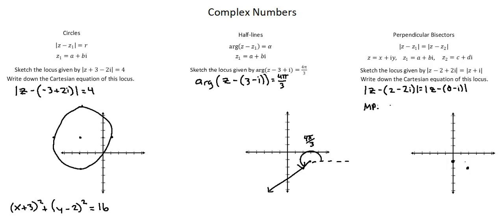The midpoint is the x values added and divided by 2, 2 plus 0 over 2, and the y values added and divided by 2, negative 2 minus 1 divided by 2. We end up with 1 negative 3 over 2.